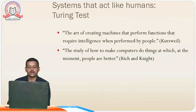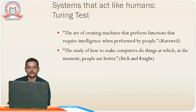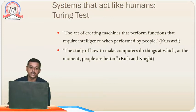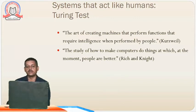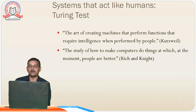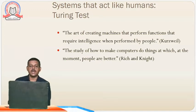A system that acts like a human — for that we have the Turing Test. Turing gave a test to the computer: when they ask questions to the computer and based on the answers received, they can determine whether that machine is acting humanly. The art of creating machines that perform functions requiring intelligence when performed by people — we can say it is the study of how to make a computer do the things at which people are currently better. Wherever people act at their best, the machine acts the same.